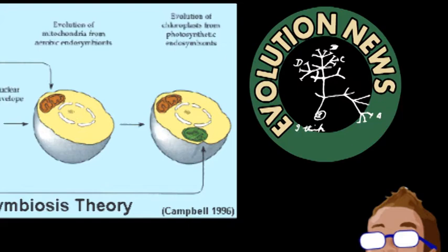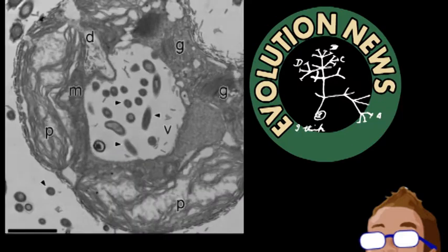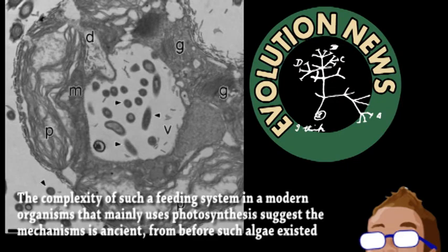Using transmission electron microscopy, they observed the algae sucking in a bacteria through a mouth-like opening into a tubular section of the cellular membrane. It then transported the bacteria to an acidic vacuole, where it was digested. While this isn't direct evidence of endosymbiosis, it does demonstrate for the first time that eukaryotic algae have the ability to absorb bacteria, which was a crucial step in the evolutionary hypothesis.